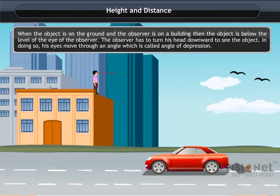Angle of Depression. When the object is on the ground and the observer is on a building, then the object is below the level of the eye of the observer. The observer has to turn his head downward to see the object. In doing so, his eyes move through an angle, which is called an angle of depression.